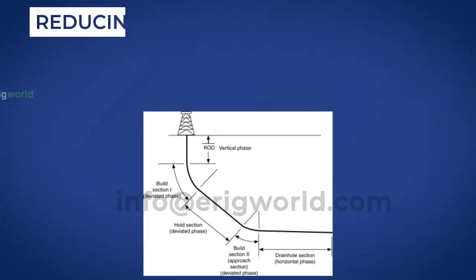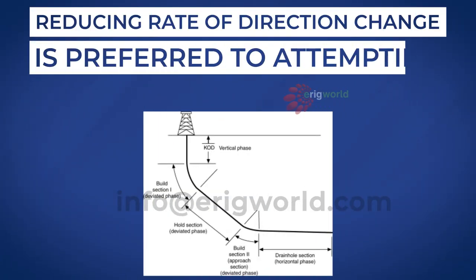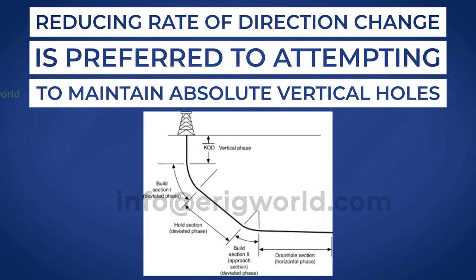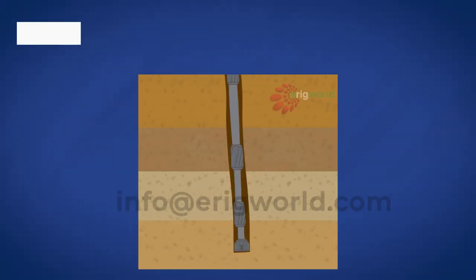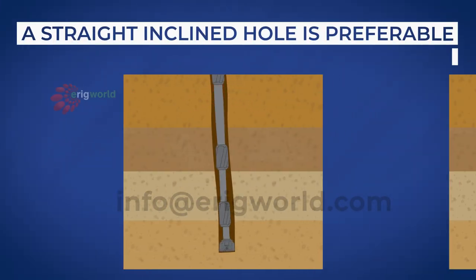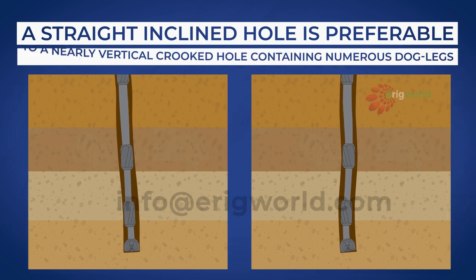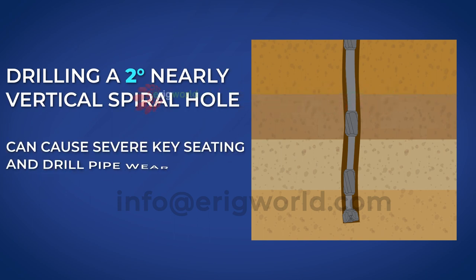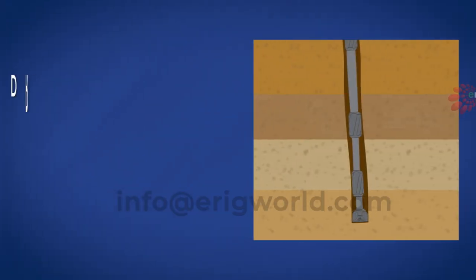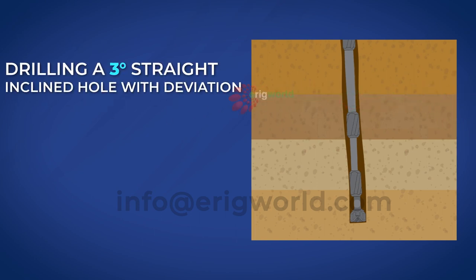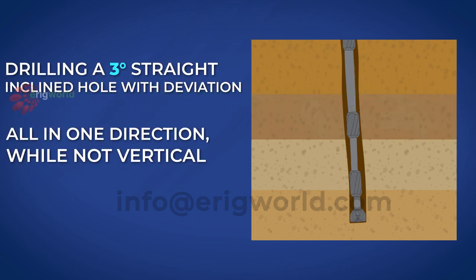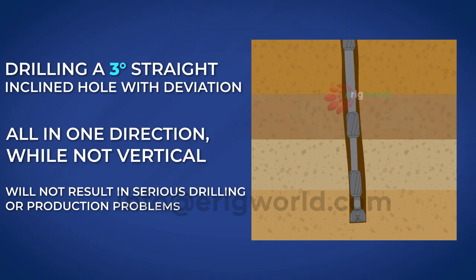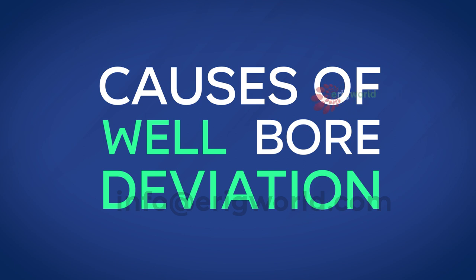Therefore, reducing the rate of direction change is preferred over attempting to maintain absolute vertical holes. Consequently, a straight inclined hole is preferable to a nearly vertical crooked hole containing numerous dog legs. Drilling a two-degree nearly vertical spiral hole can cause severe key seating and drill pipe wear, whereas a three-degree straight inclined hole with deviation all in one direction will not result in serious drilling or production problems. The exact causes of wellbore deviation are unknown.